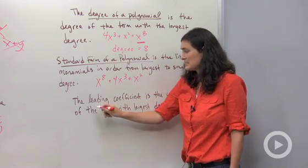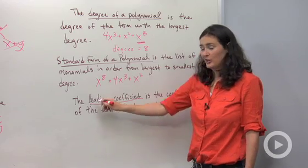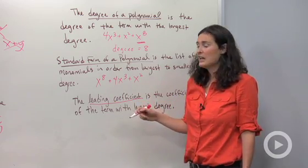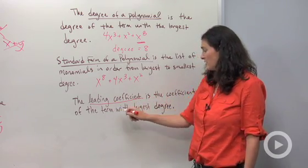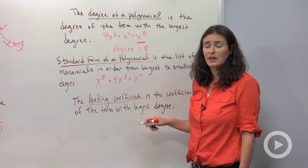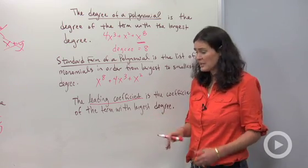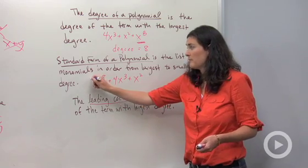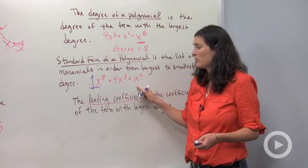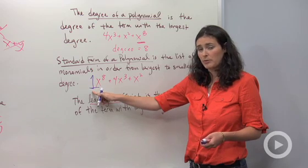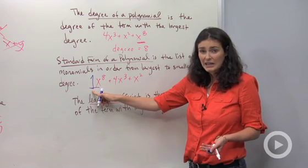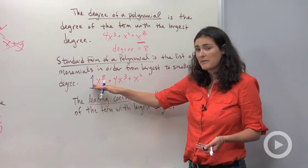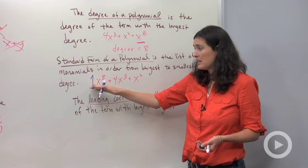Last but not least is the term leading coefficient. Leading coefficient is the coefficient of the term with the largest degree. Well if something's in standard form, it's really easy to find that because your term with largest degree shows up first. So in this standard form polynomial, my leading coefficient would be 1. Sometimes it's a negative number. It's whatever shows up in front of this highest exponent term.